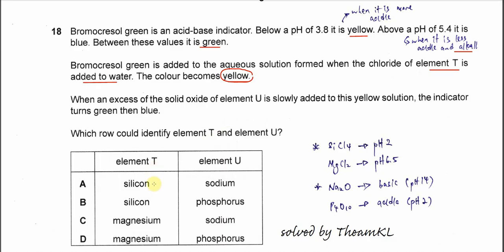Elements T in the answer is just silicon and magnesium. We know that chloride of silicon is silicon tetrachloride. When it dissolves in water it will form a solution with pH 6.5. So we know that element T now cannot be magnesium, only silicon. The answer is just A or B.